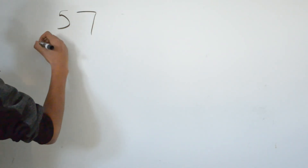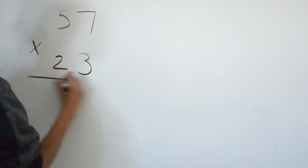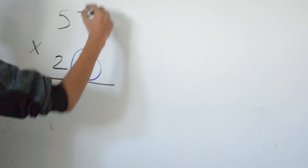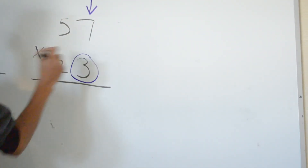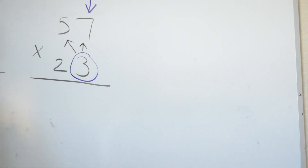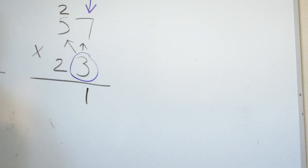Now for our last example of multiplying 2 digits by 2 digits, we have 57 times 23. Circle the second number on the bottom and add an arrow on the second number on top. We always have to multiply from right to left. So 3 times 7 and 3 times 5. 3 times 7 is 21. 3 times 5 is 15, plus 2 is 17.